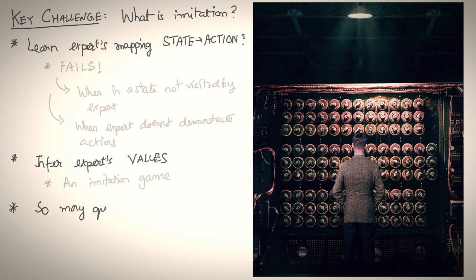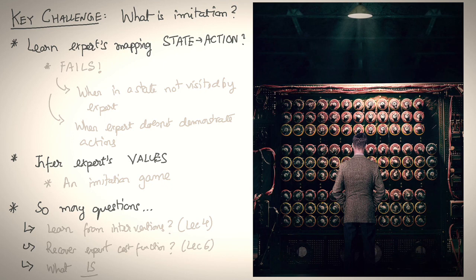Subsequently, our key insight was to look at imitation learning as inferring the expert's latent values, and this led to definition for an imitation game. But we're left with many questions that we hope to explore in the coming lectures. For example, how can we learn from interventions? Something we'll look at in Lecture 4. Or how do we recover the expert's cost function? Something we'll look at in Lecture 6. And finally, what is this game and how do we solve it? Something that we'll dive deep in Lecture 9.